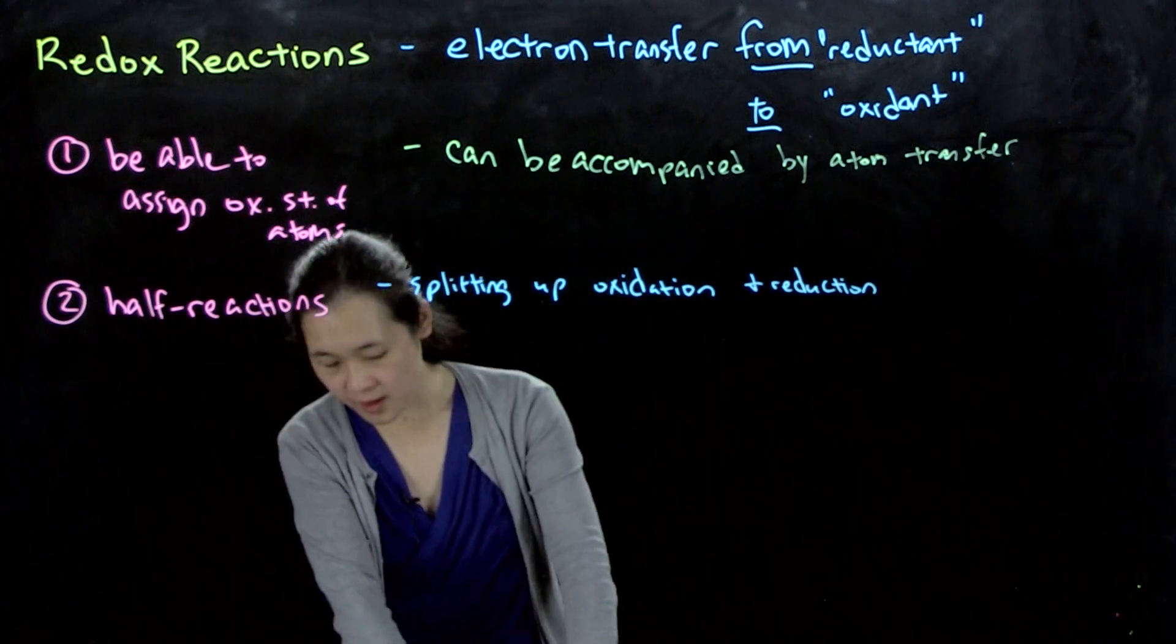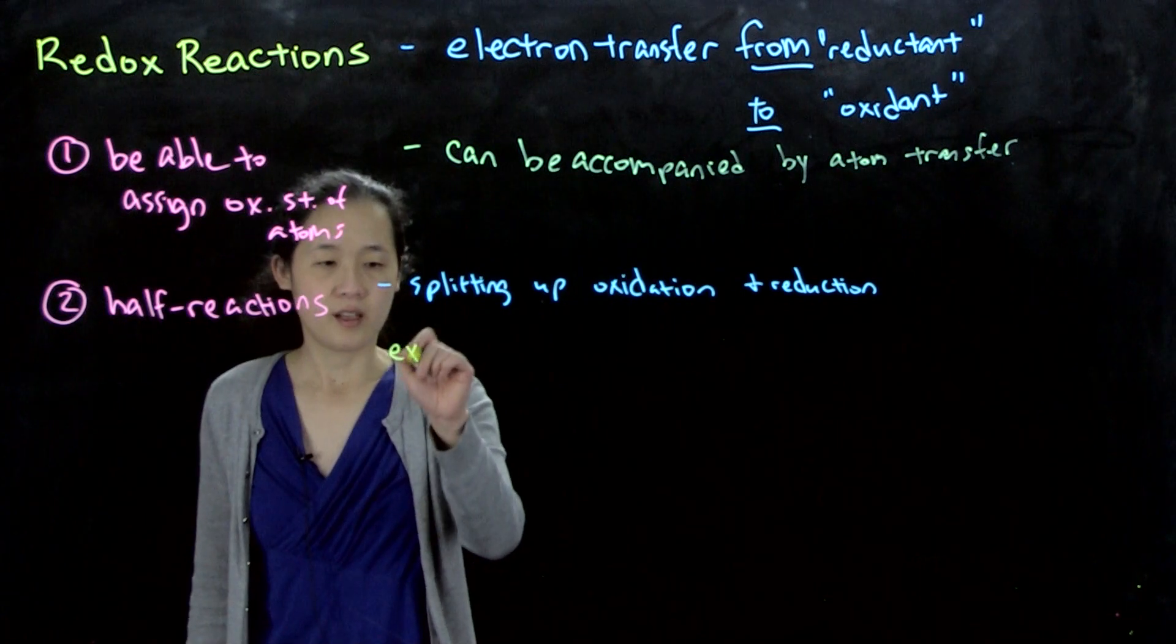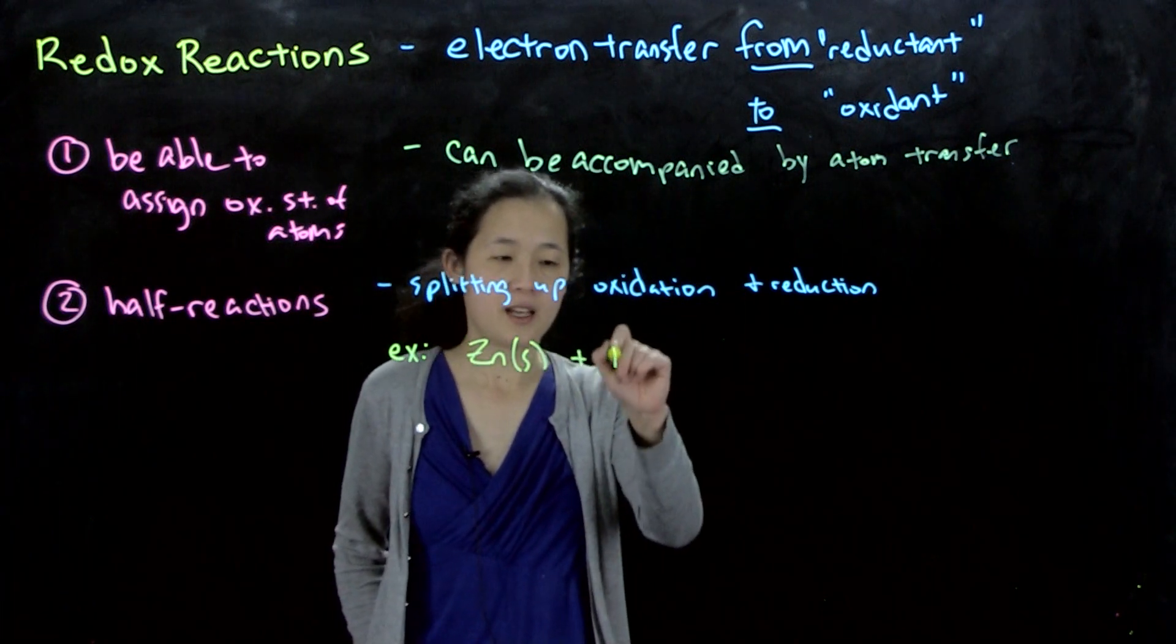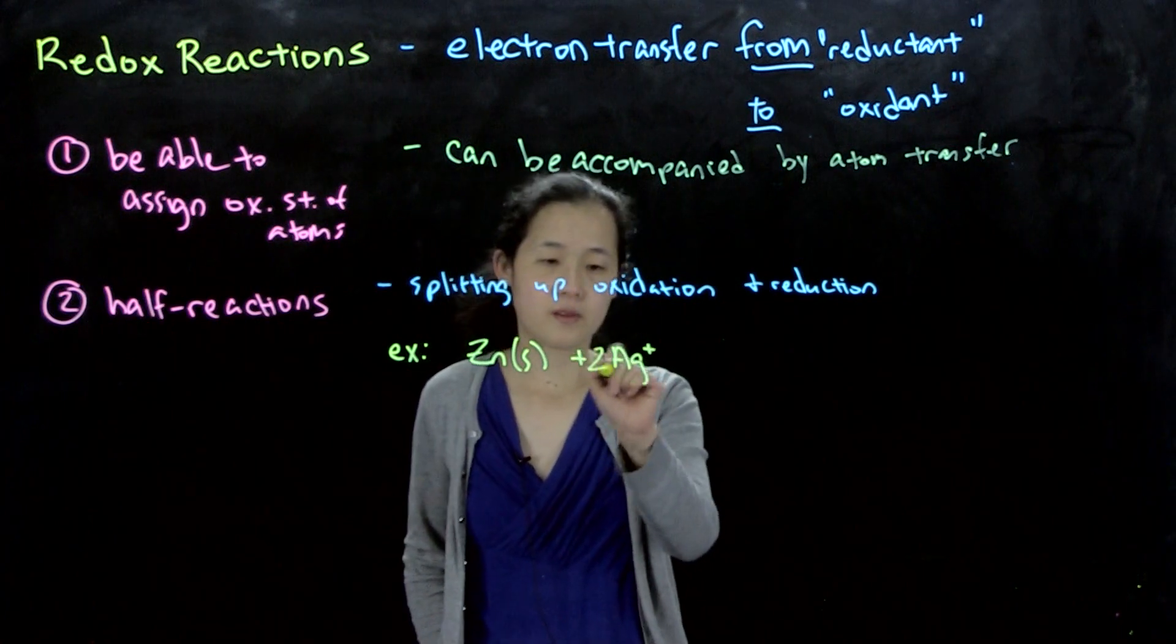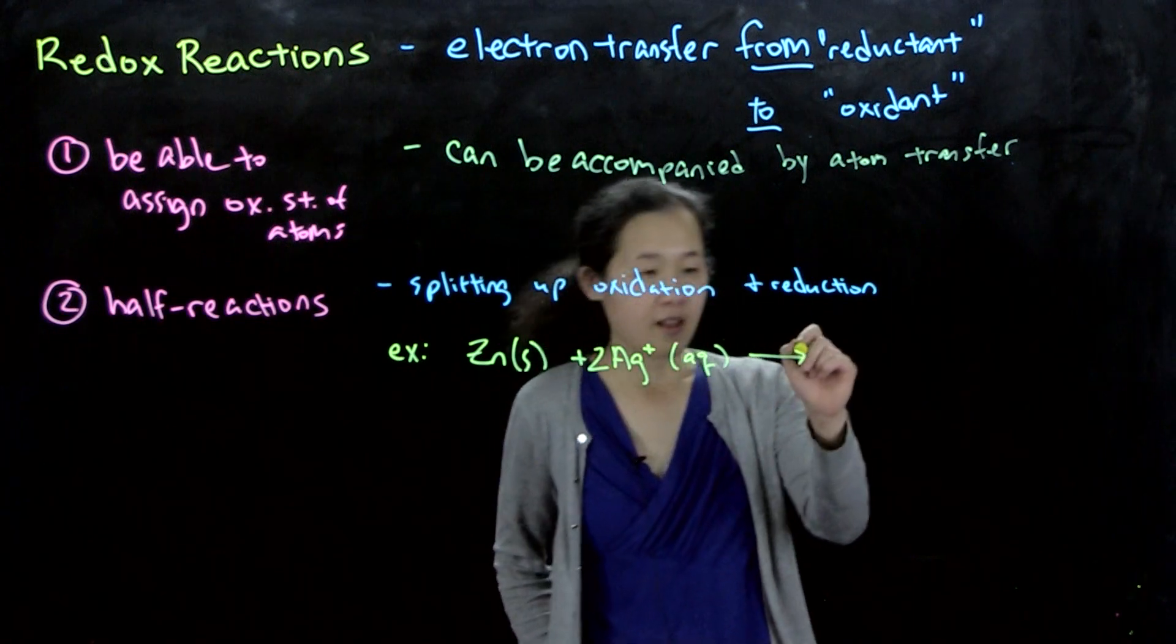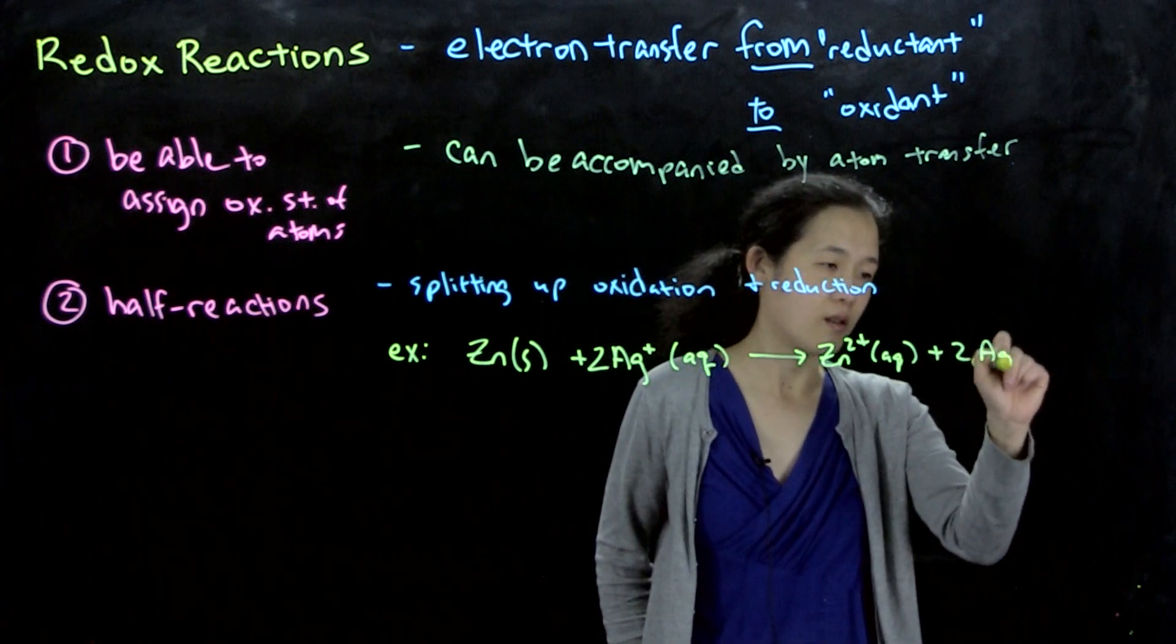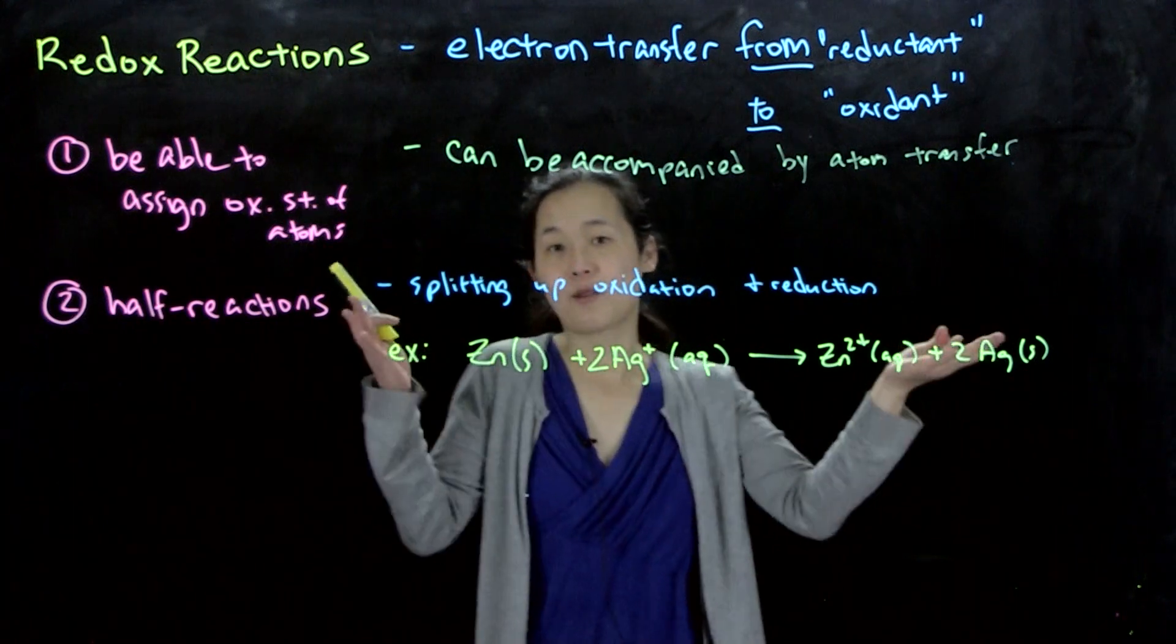So one example would be, let's say, this is from the Atkins textbook. Suppose we have a full chemical reaction. So let's say we take zinc metal, and then we add aqueous silver ions. And that ends up giving us aqueous zinc 2 plus, and 2 silver metal. So this is a full reaction, right? This is a real thing.